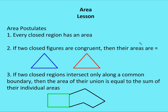Some other things you need to know — some area postulates. Number one: every closed region has an area. Number two: if two closed figures are congruent, then their areas are equal. So if this triangle in blue is congruent to the triangle in red, then I know their areas are going to be congruent as well. If I can prove that these two triangles are congruent by angle-side-angle, side-angle-side, or any of the other triangle congruence postulates, then I know the areas are also going to be equal.